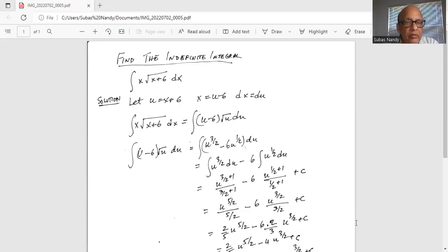So that becomes equal to u minus 6 times square root of u du. We write square root of u as u to the power of half and then distribute the u to the power of half inside the parenthesis.